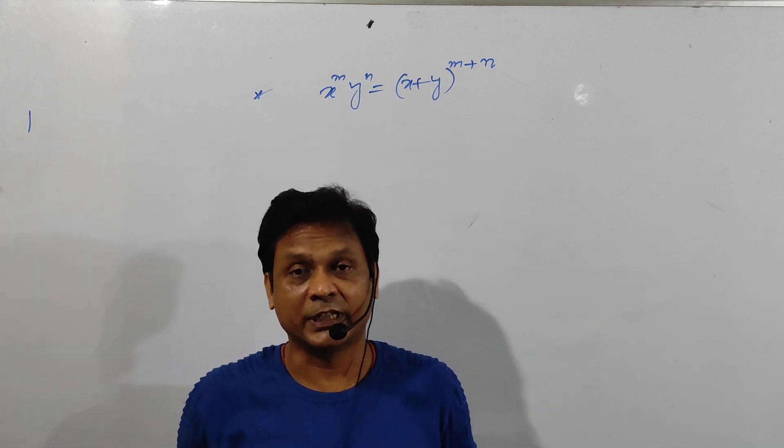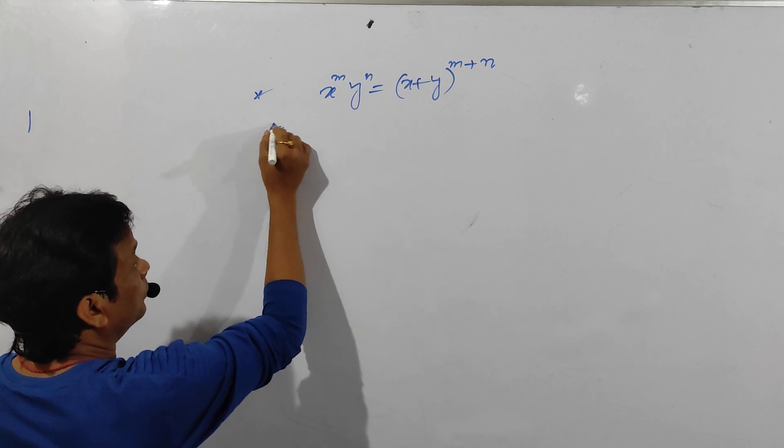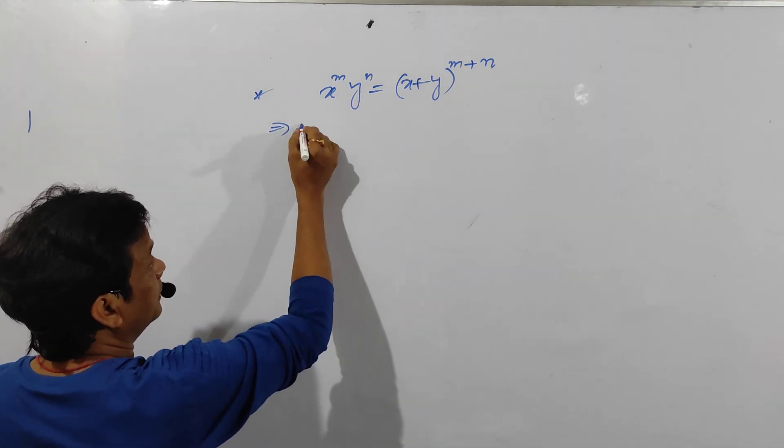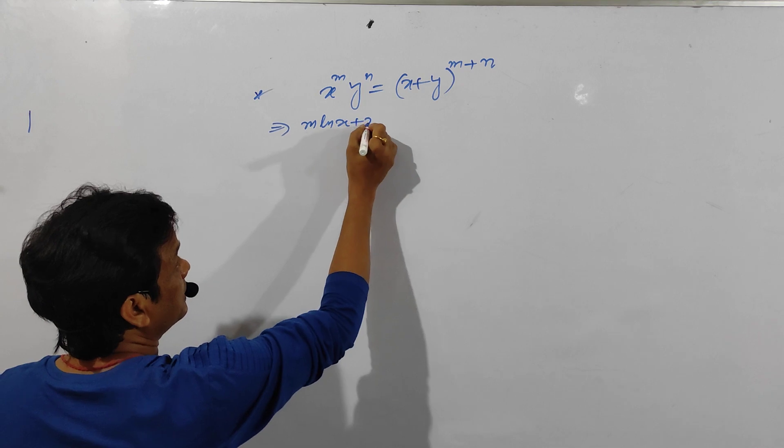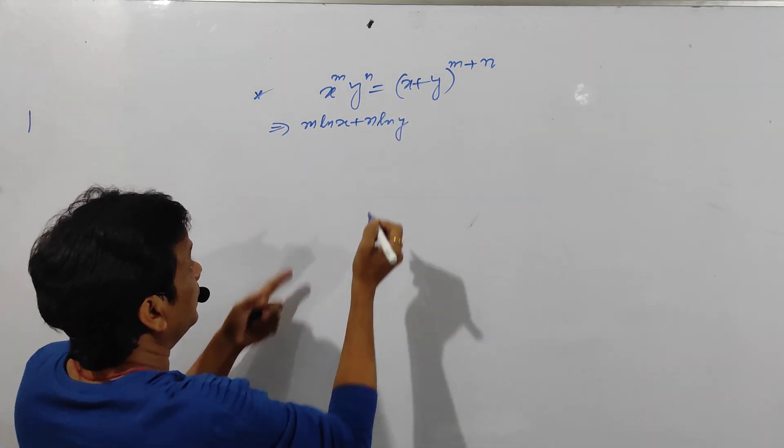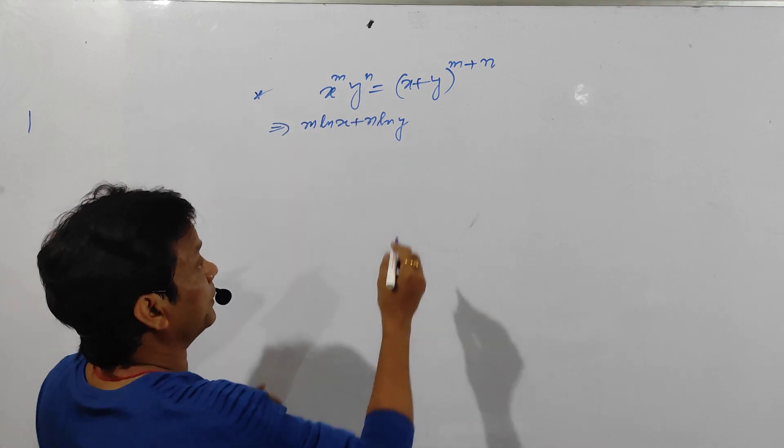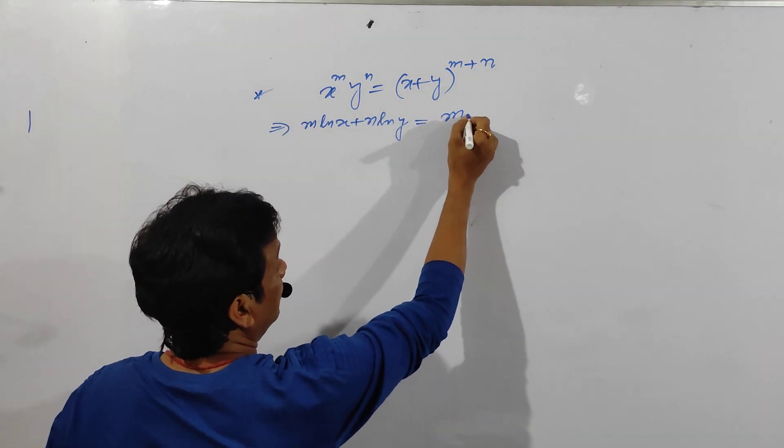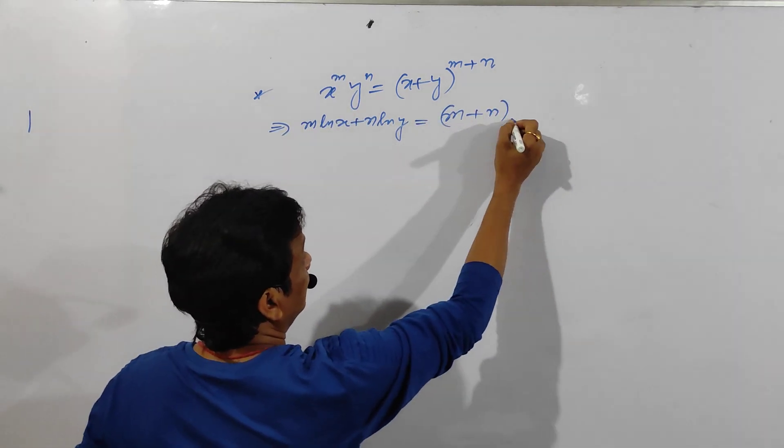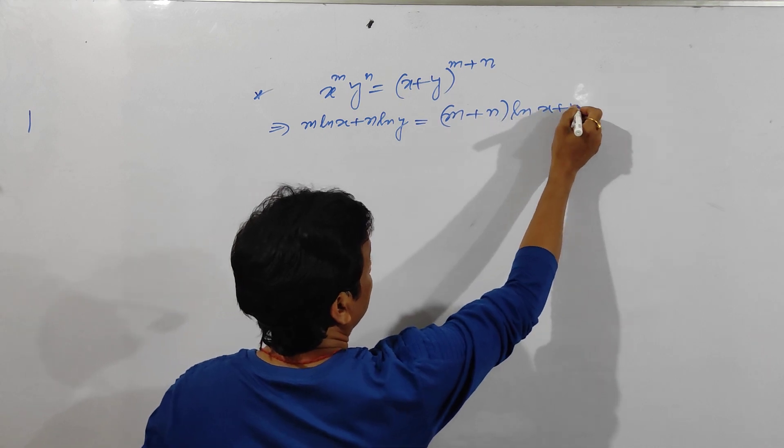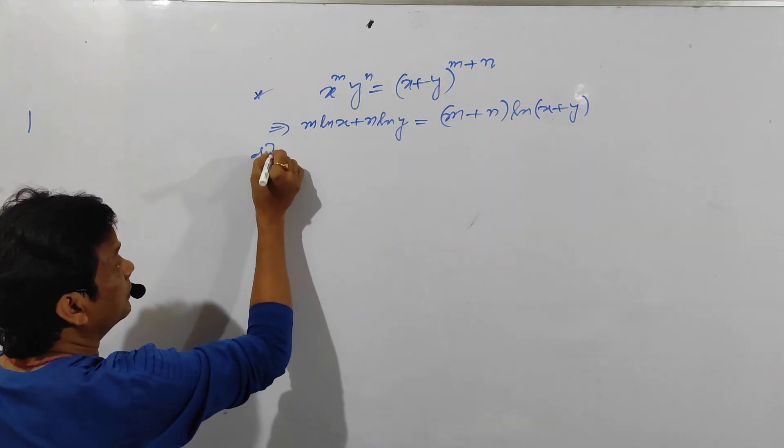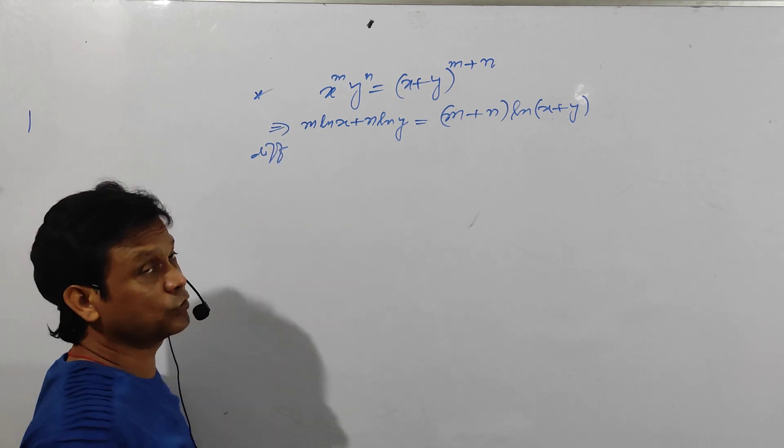Okay, take logarithm on both the sides. It will become m log x plus n log y, because log ab is log a plus log b. So power will come to the front side and it will become m plus n into log of x plus y. Then simply differentiate.